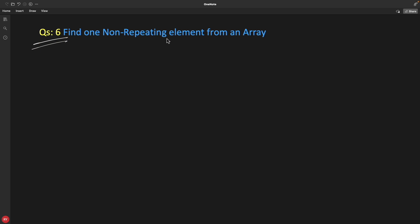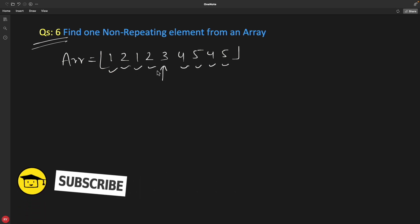Find non-repeating element from an array. What I mean is if your array is like this we have one and one repeating, two and two repeating, four and four repeating, five and five repeating, but three is non-repeating element. So you have to find three from this.